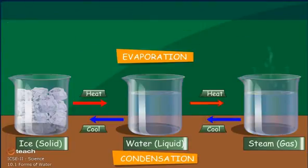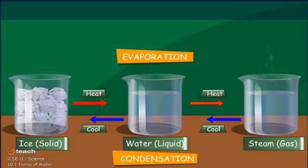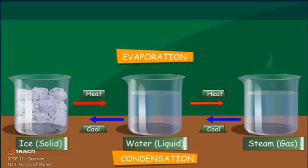In evaporation, water changes to steam — which is from a liquid to a gas. In condensation, water vapour turns back to water, or gas changes to a liquid. So evaporation is liquid to gas, and condensation is gas to liquid.